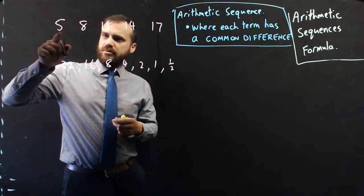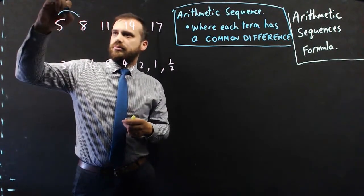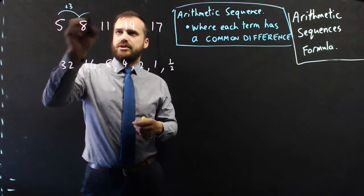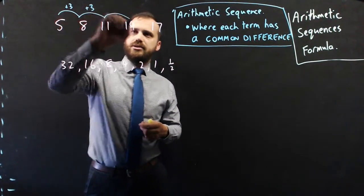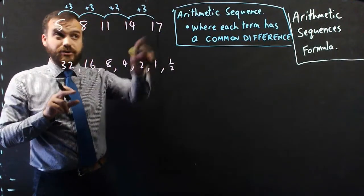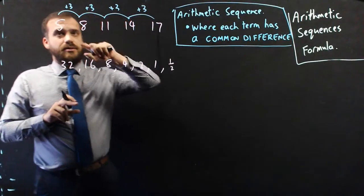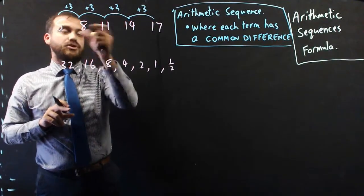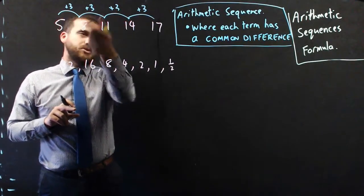So, this term to this term, add 3. This term to this term, add 3. This term, add 3. This term, add 3. This is an arithmetic sequence because each term has a common difference, the same amount between them.